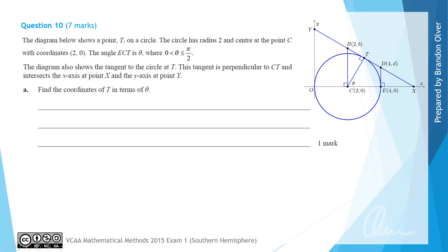For part A we are asked to find the coordinates of T in terms of theta. To find the coordinates of T in terms of theta, we need to isolate a right-angled triangle that has theta as the angle and a hypotenuse length of 2, which is equivalent to the radius of that circle. We also need to remember that there is a distance of 2 that goes from here to the centre of the circle, which will be important when we are calculating the coordinates of T.